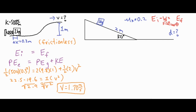Looking at the block at its initial position, it only has gravitational potential energy — it's not moving and not compressing anything. We then analyze it at position two and position three. When it slides to position two, some energy is taken away by friction. At the very bottom, position three, it has kinetic energy but its gravitational potential energy is gone because it has lost all of its height.